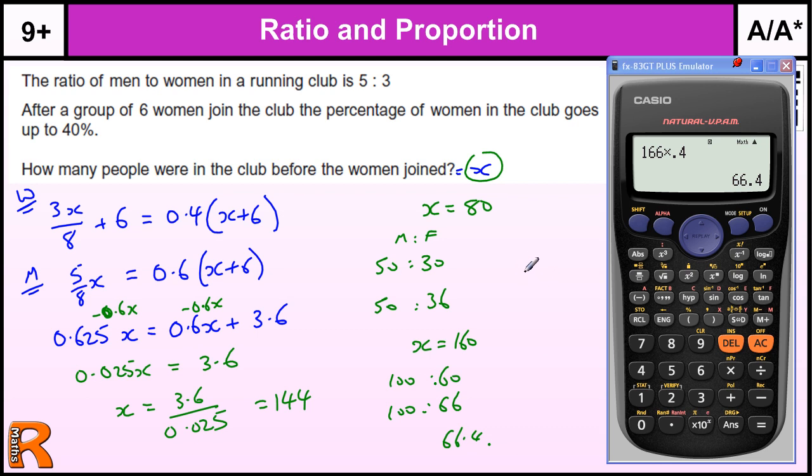So somewhere in between, and then we could work maybe 120. And then we keep doing it until we get to the actual answer, where we end up finding that 40% of the new total is 140. Well, is correct. So you get 144.